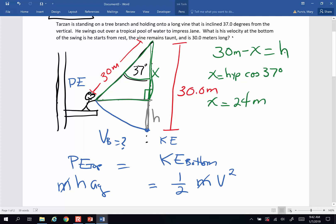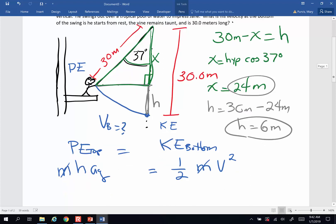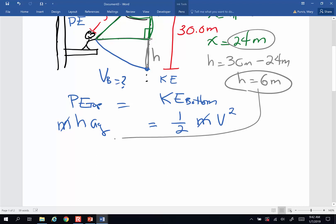So what's h going to be? Well, h is actually going to be 30 meters minus my x, 24 meters. So change in height for Tarzan is about 6 meters. That I am going to then plug into here.